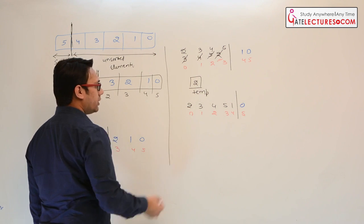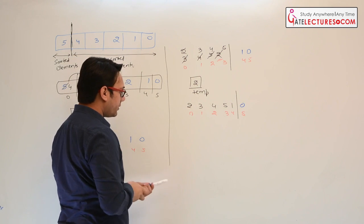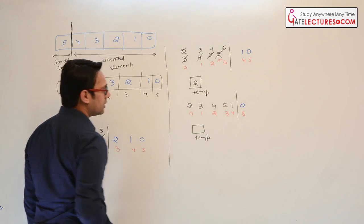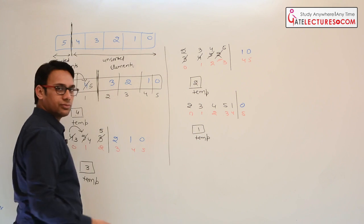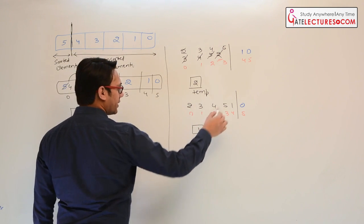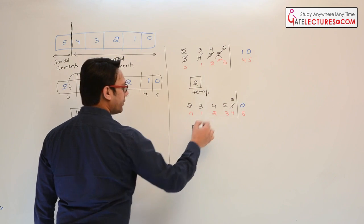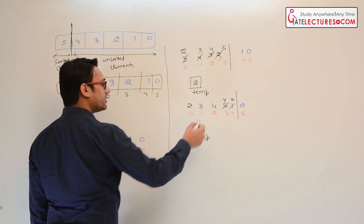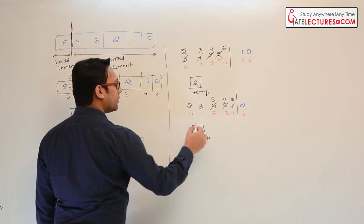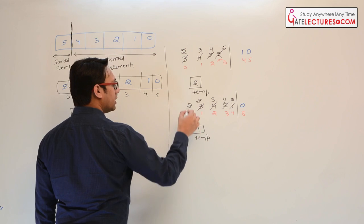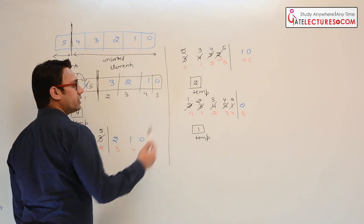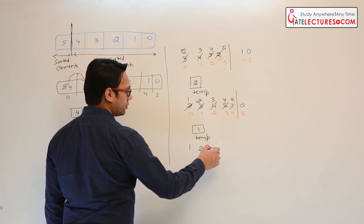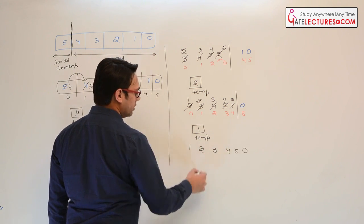Now we have 3, 4, 5 followed by 2, 1, 0 with index locations 0 to 5. We need to sort 2. Take an extra temporary variable and copy 2. Compare 2 and 5 — 5 is greater, so shift 5. Compare 4 and 2 — 4 is greater, so shift 4. Compare 3 and 2 — 3 is greater, so shift 3. Now put 2 here. So 2, 3, 4, 5 are sorted. Next element: we have 2, 3, 4, 5, 1, 0. Copy 1 into temp. Compare 1 with each element — 5, 4, 3, and 2 are all greater than 1, so each shifts. Copy 1 here. Now 1, 2, 3, 4, 5 are sorted.